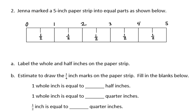The next direction says, estimate to draw the 1/4-inch marks on the paper strip. And then we'll fill in the blanks below. Well, if I'm looking at 1/4, that means I need to take my 1 whole and divide it into 4 equal pieces.